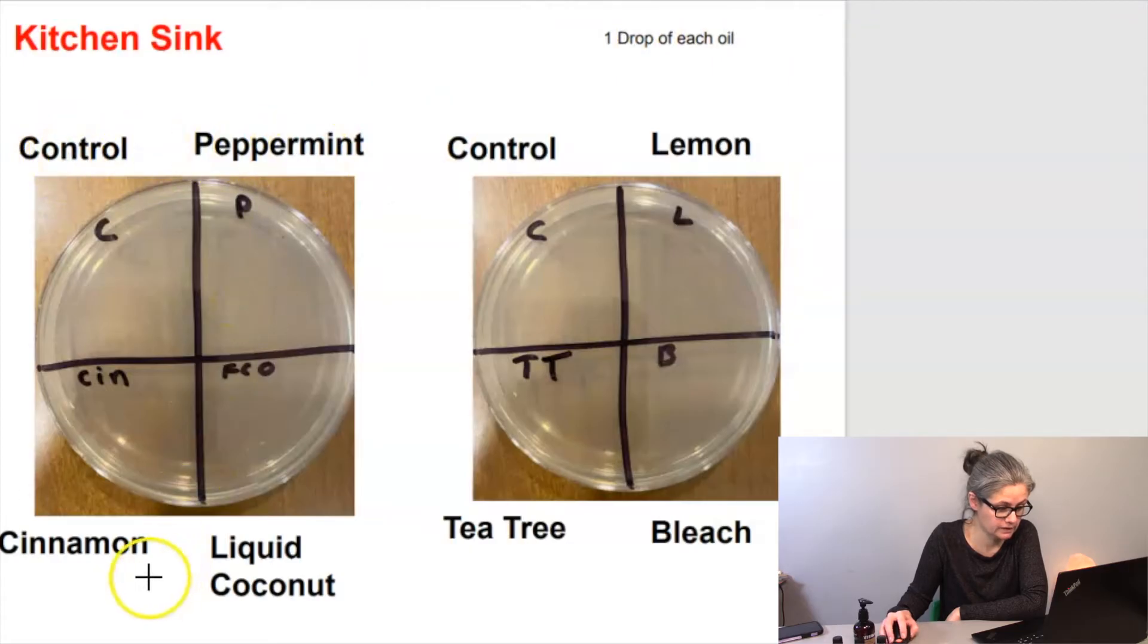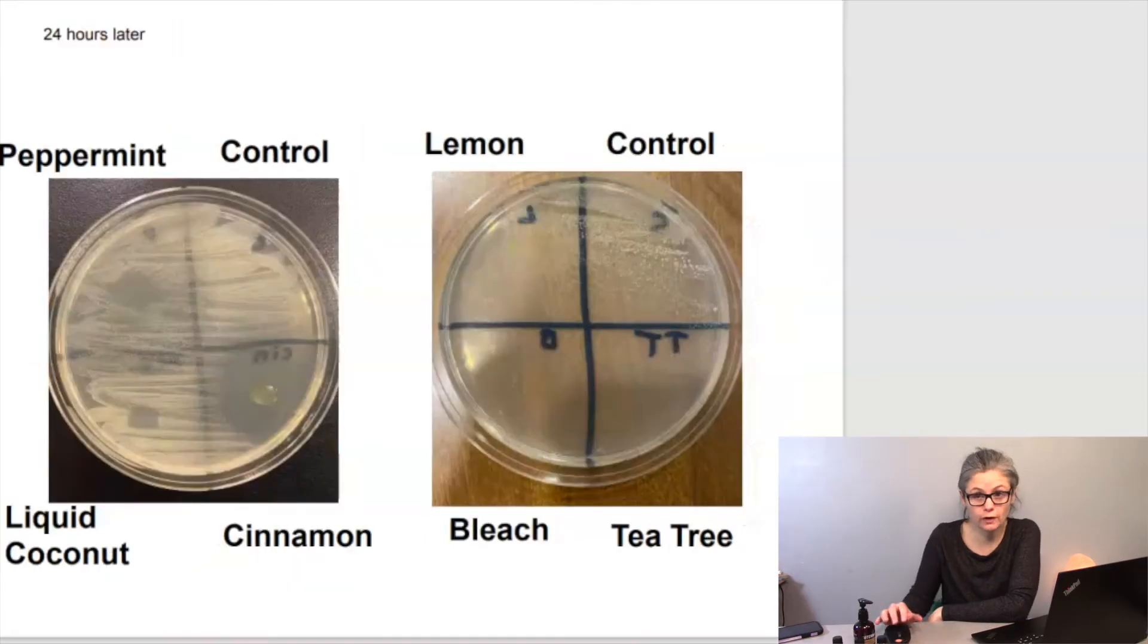Control, peppermint, cinnamon, liquid coconut, and on the second dish, I did control, lemon, tea tree oil, and I had an extra spot, so I put a drop of bleach there. So 24 hours later, we can see some good results.